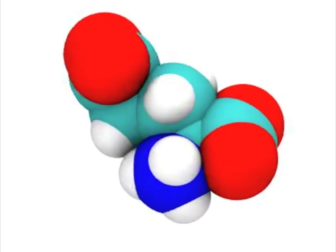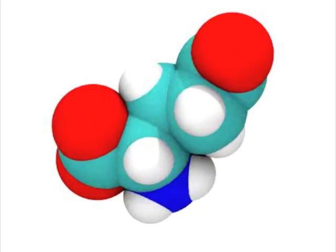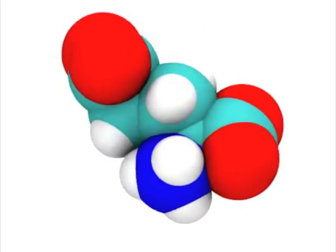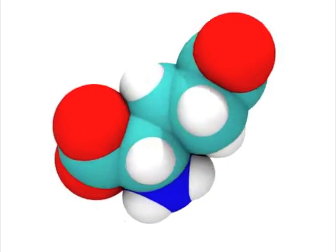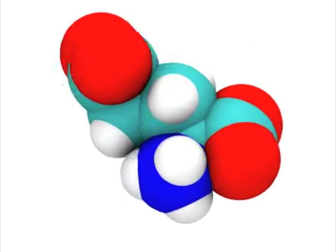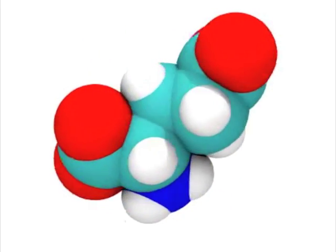This small molecule is called glutamate and is the primary excitatory neurotransmitter in the central nervous system. It is responsible for relaying signals between nerve cells and plays a critical role in learning and memory.